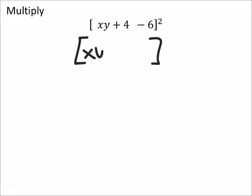So I'm going to combine, not the x and y because it doesn't have any like terms, but 4 minus 6, well that's minus 2, and we're going to square this.